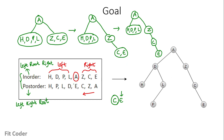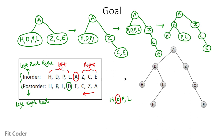Then we pick the next node in the postorder traversal, which is D. D is part of the subtree H, D, P, L. So left of D is H and right of D is P, L, and we can further split it. Then we pick L — L is part of the P and L subtree. So left of L is P and right of L is null. If we split this further it gives us this subtree.